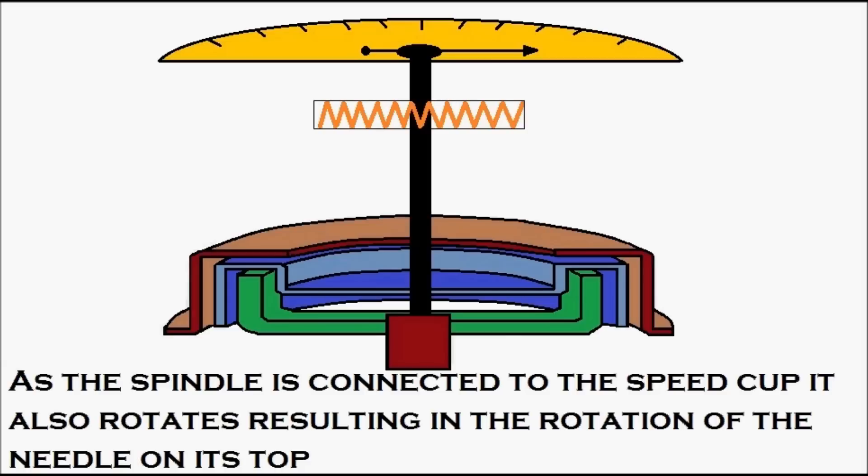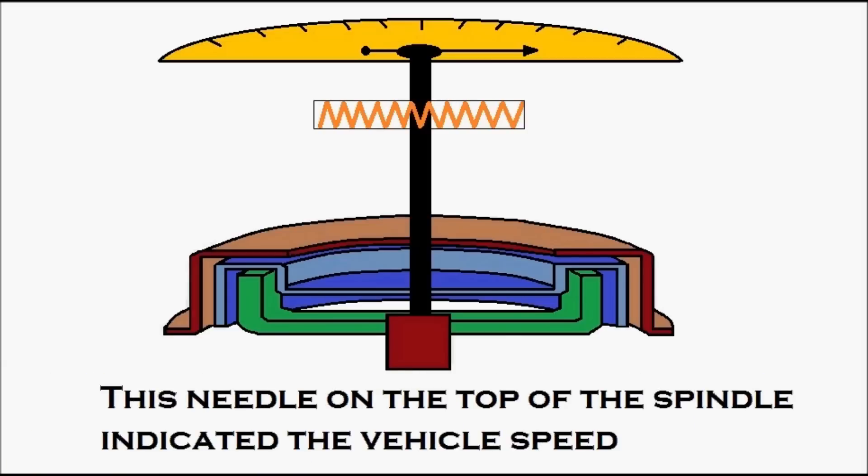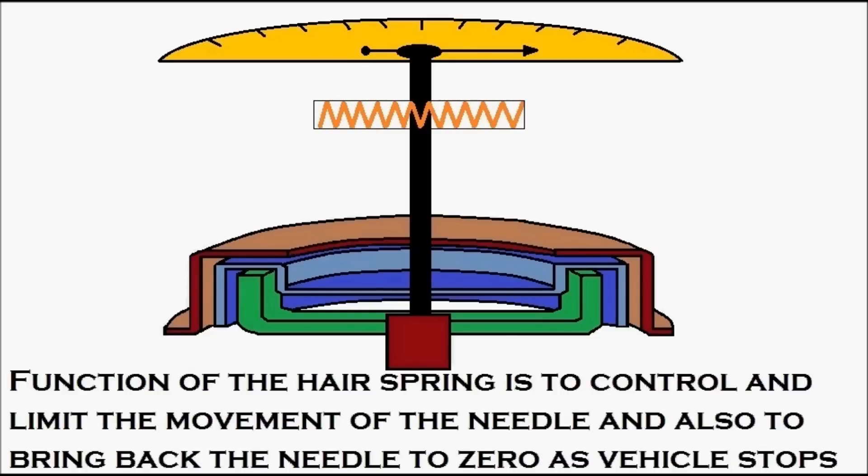As the spindle is connected to the speed cup, it also rotates, resulting in the rotation of the needle or pointer on its top. This needle on the top of the spindle indicates the vehicle speed. You can see the needle moves and it indicates the vehicle speed.